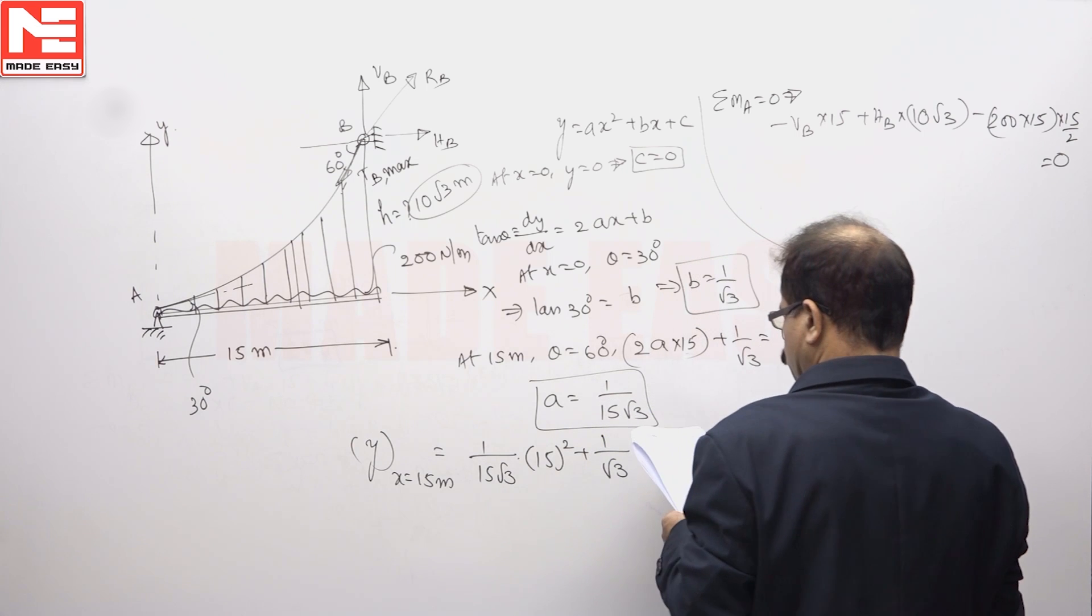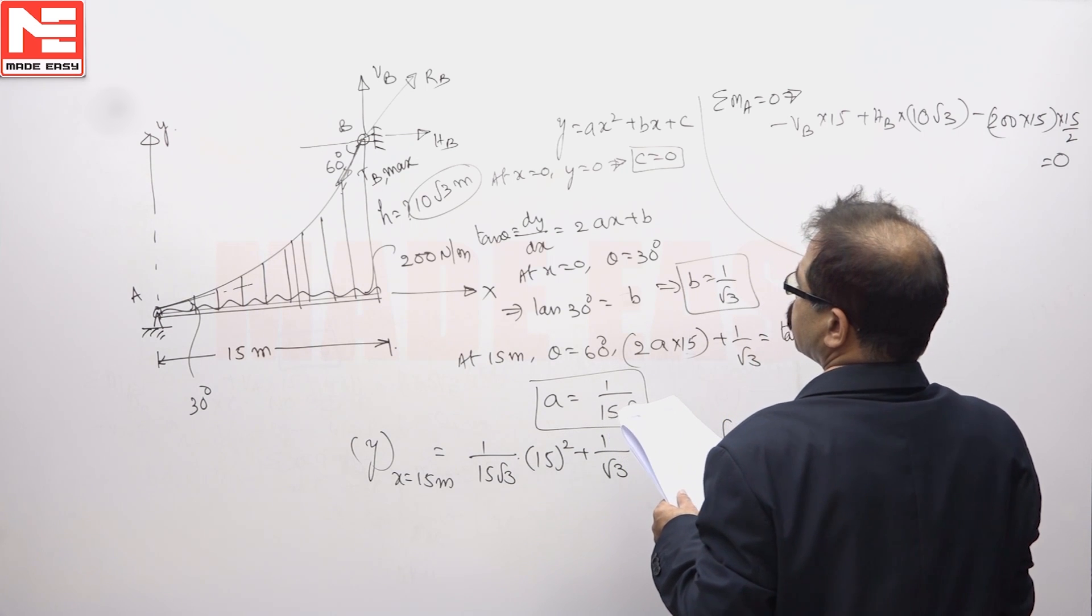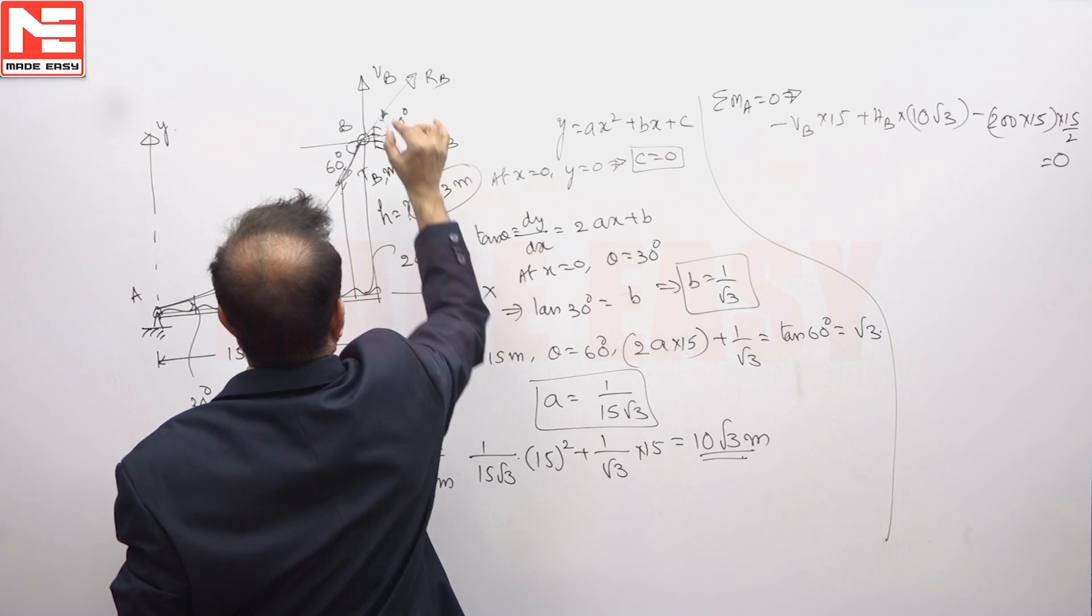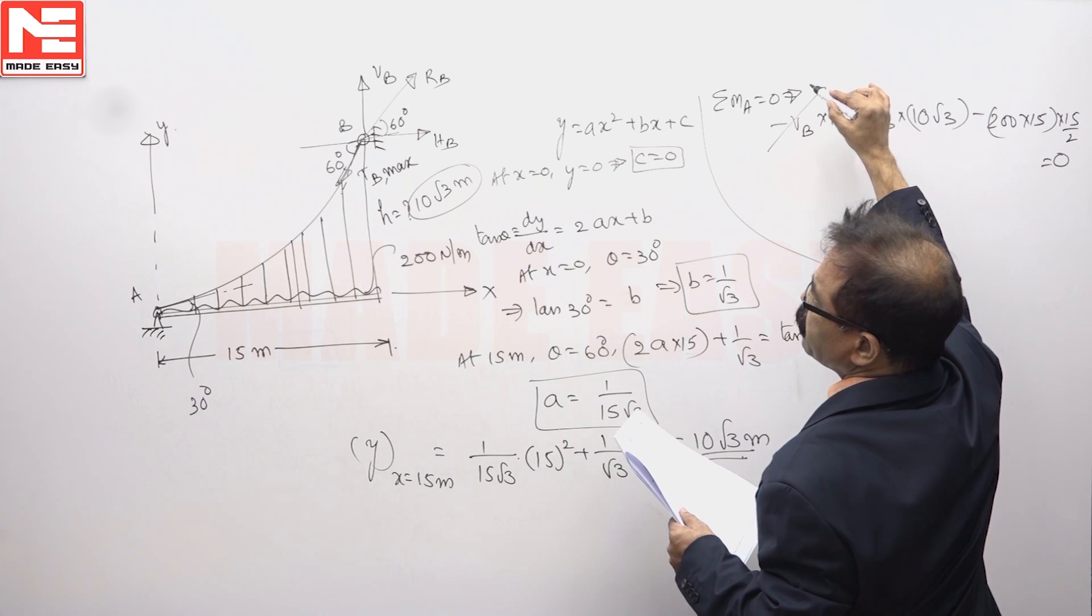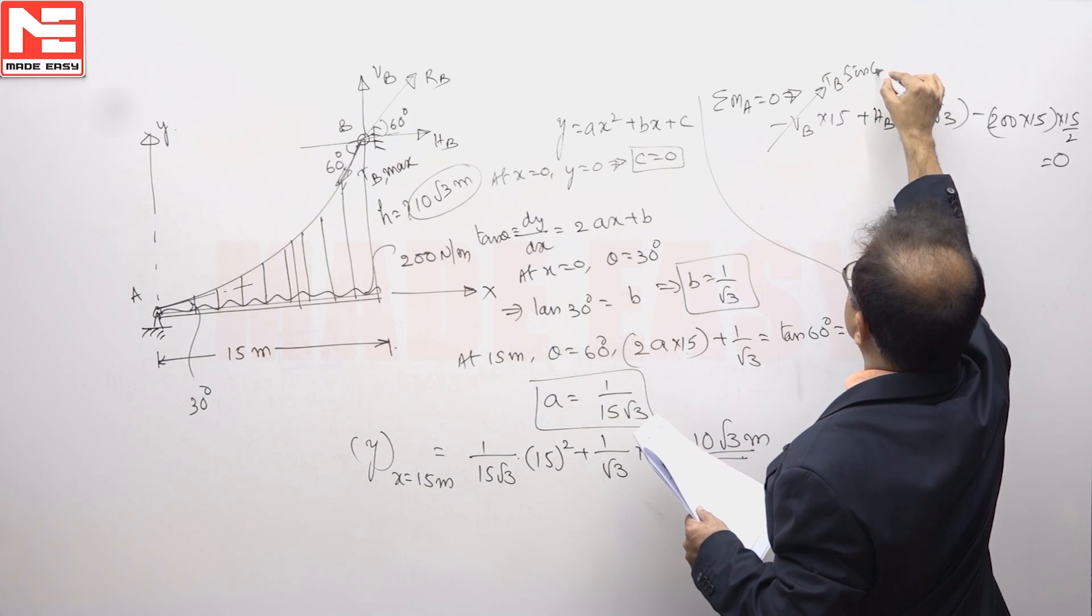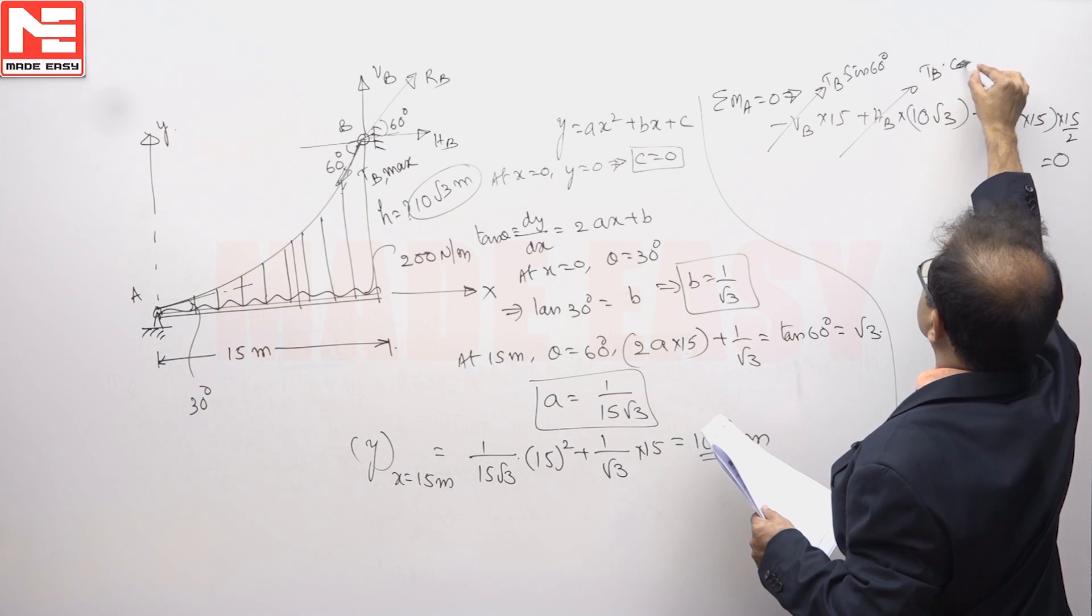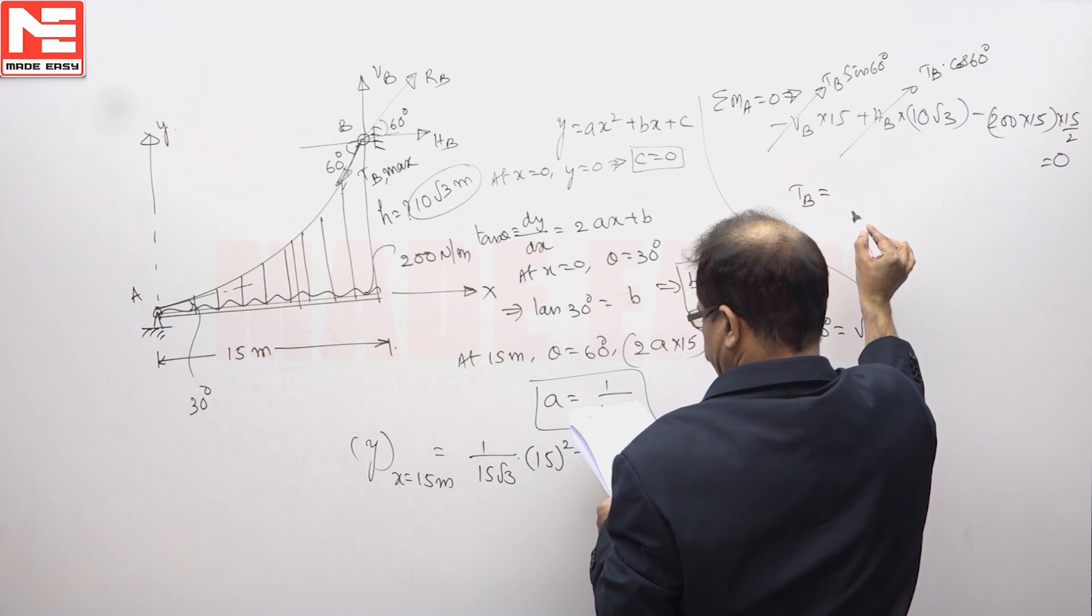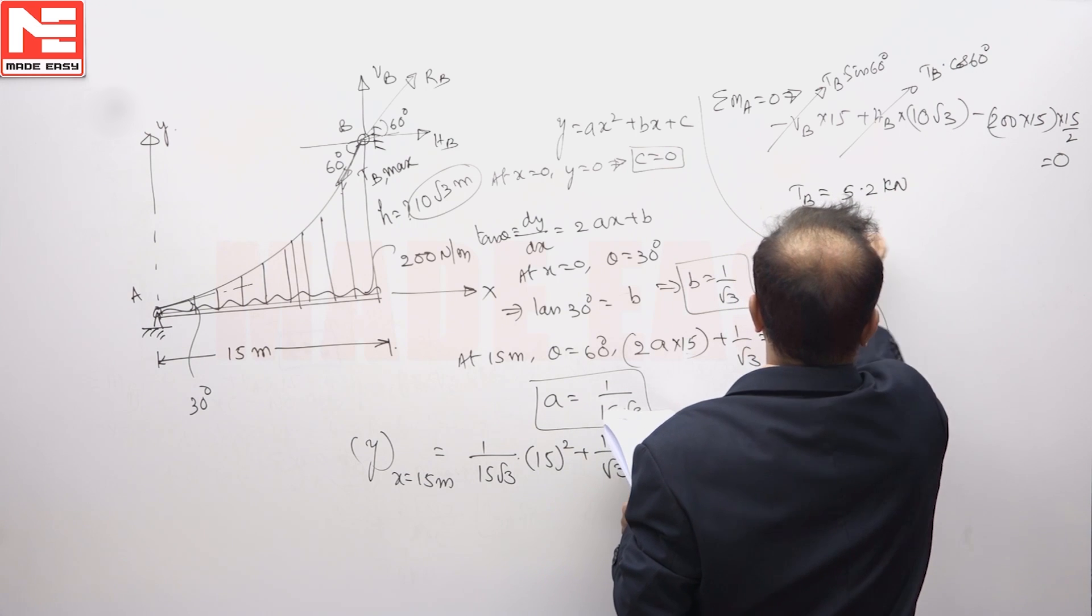So that we can write TB. HB is now nothing but this tension TB if you take it, this is 60 degrees. VB we can write it as TB, TB sin 60, where HB is TB cos 60 is equal to 0. So tension in the cable at B you will get 5.2 kilo Newton approximately.